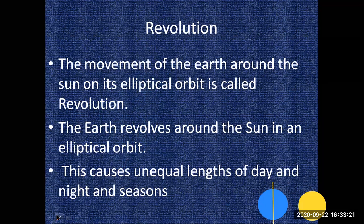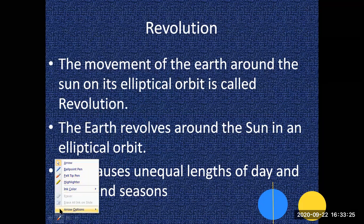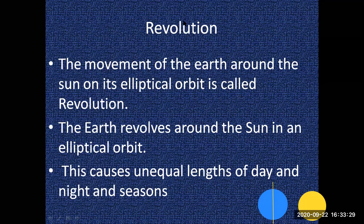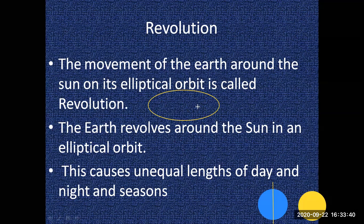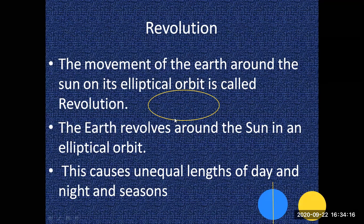What is an elliptical orbit? An elliptical orbit has the shape of an ellipse — like an oval. So you can say that the Earth revolves around the sun in an elliptical orbit, which is an oval-shaped orbit.